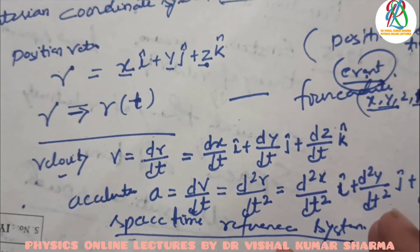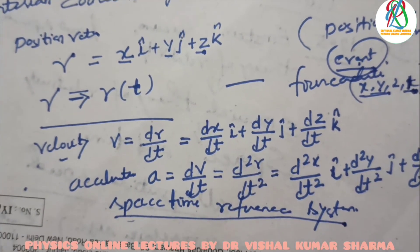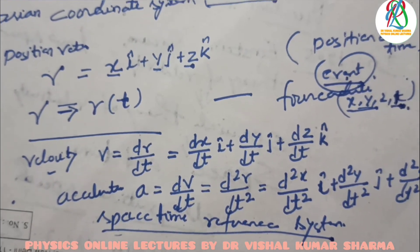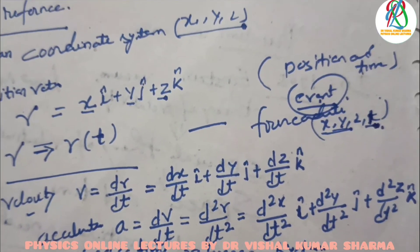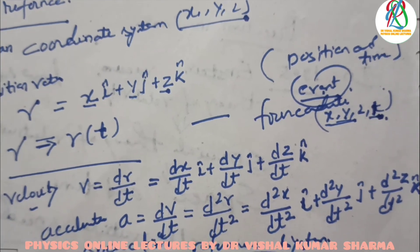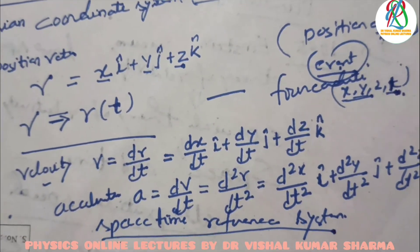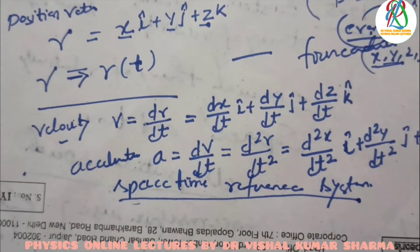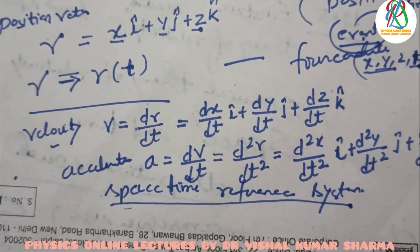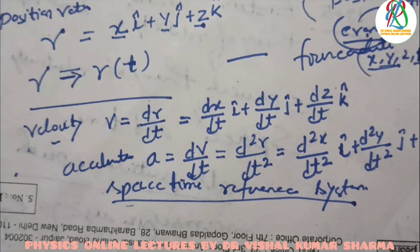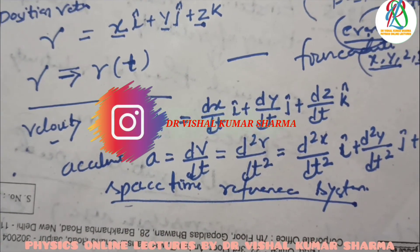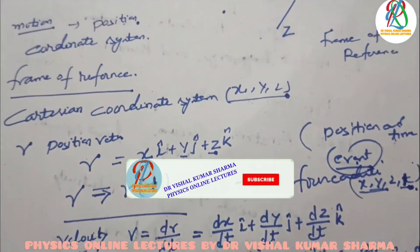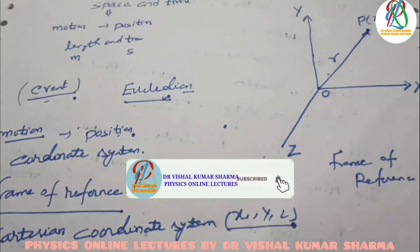This is the applicability of introducing the frame of reference. The frame of reference is widely used in the special theory of relativity when we discuss the Galilean and Lorentzian transformations. There are two types of frames: inertial and non-inertial, which we will discuss later. Please keep watching for further upcoming lectures, subscribe to the channel, and thanks for watching.